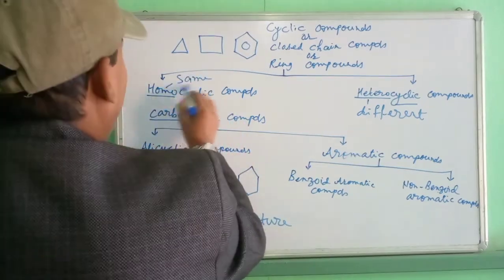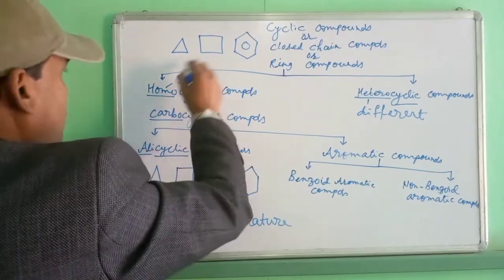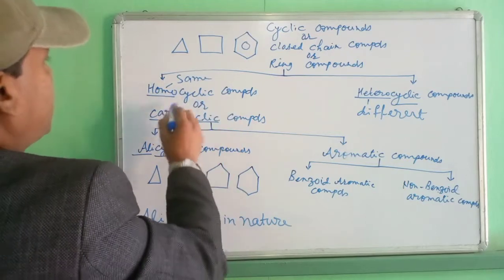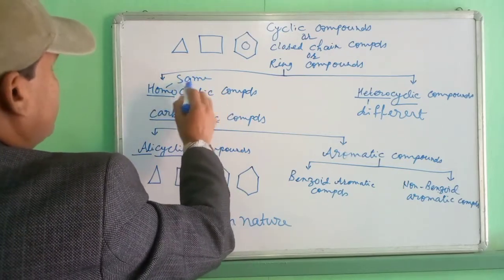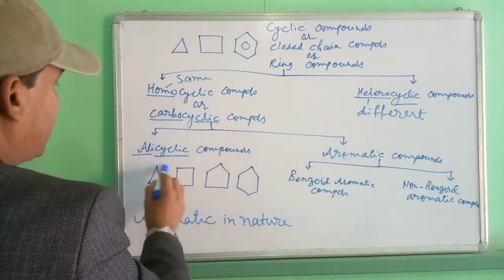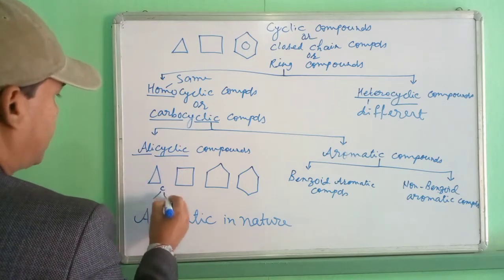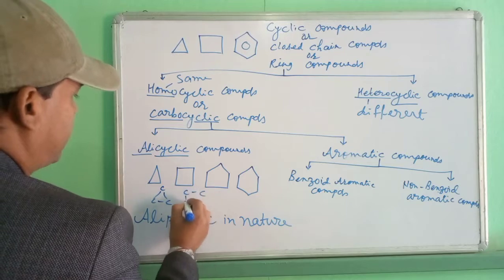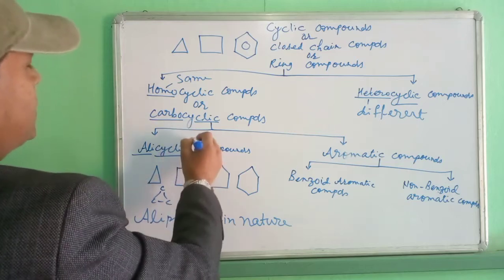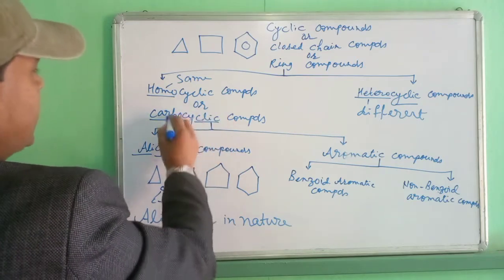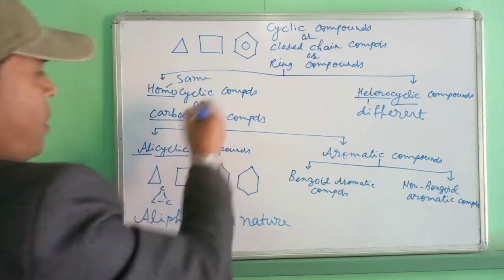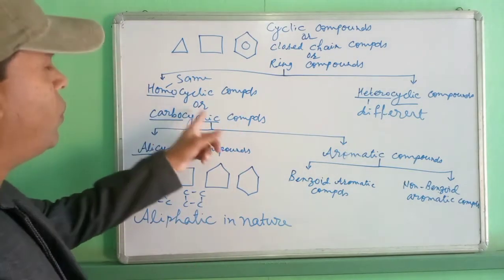In the case of homocyclic, 'homo' means same — same similar atoms bonded with one another to make a ring-like structure. Carbocyclic means in the ring only carbon atoms are present — carbon bonded to carbon. The compound in which only carbon is present in the ring is said to be carbocyclic or homocyclic.